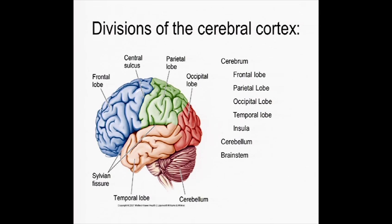We divide the brain up into different geographic regions. We talked about the cerebellum, which hangs off and is involved in smoothing out motor commands. And then the cerebrum is broken up into the temporal lobe, the occipital lobe, the parietal lobe, and then the frontal lobe. There's also an area underneath, which is the insula.